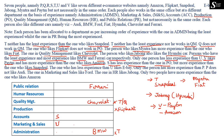The person who has less experience than U likes eBay. Since only the Admin person has less experience than U, eBay is placed in Admin. This also confirms that Snapdeal cannot be in Admin, so Snapdeal is placed in Marketing and Sales.